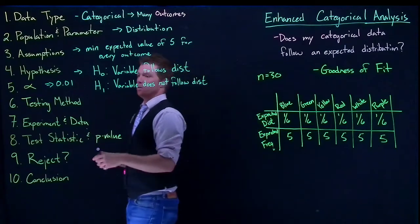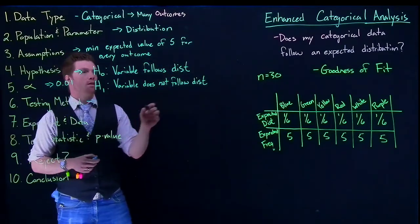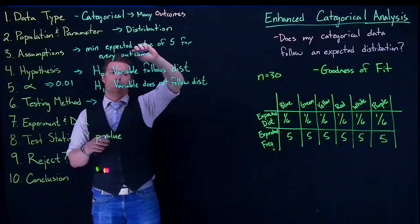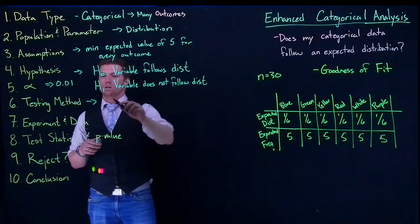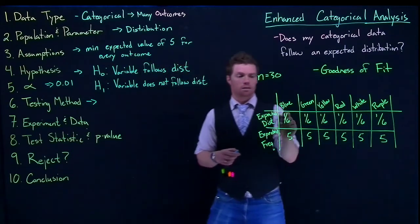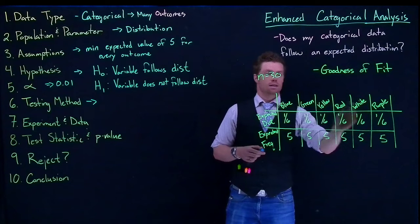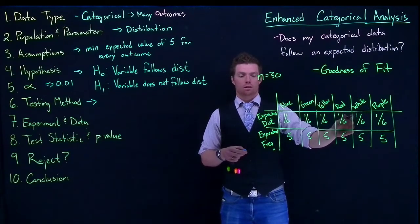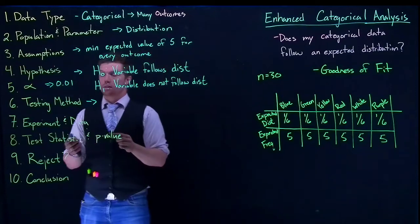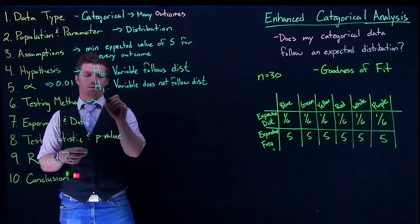Okay, so when we're here in our testing method, when we're just comparing this distribution for a single piece of categorical data, we are doing this with our goodness of fit. When we are trying to say that, hey, we have an expected distribution, and does our categorical variable actually follow this distribution? So we're at goodness of fit.